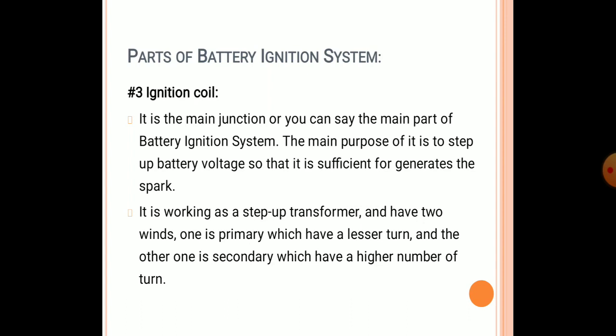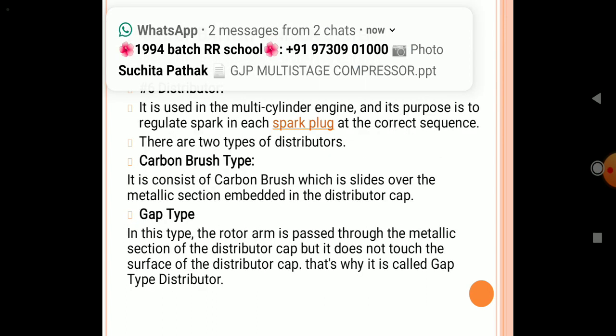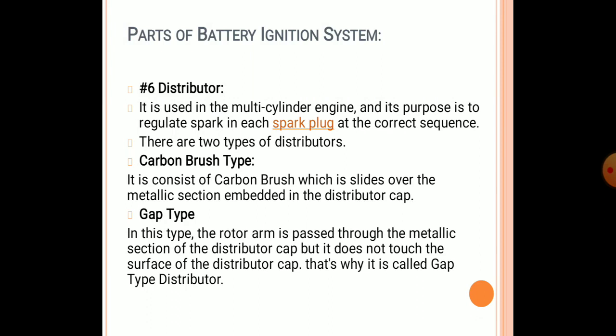The third part is the ignition coil, which is the main part of the battery ignition system. Its main purpose is to step up the battery voltage so it is sufficient to generate the spark. It works like an electrical transformer — when there is a requirement for power generation, it supplies power for ignition purposes, and when there is maximum power supply, it stores energy in the form of a magnetic field. It has a primary winding with fewer turns and a secondary winding with a higher number of turns.